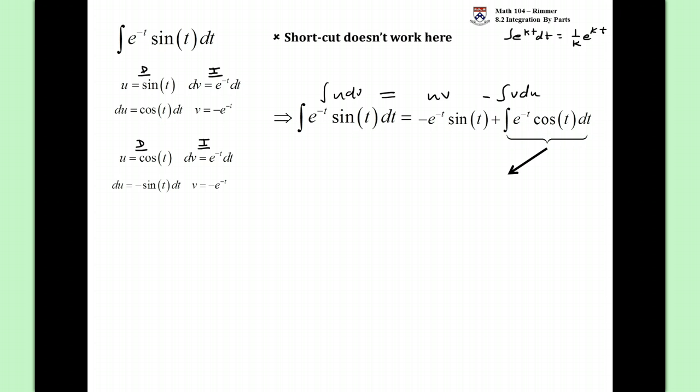So, cosine's derivative is negative sine of t. And, once again, dv's integral, e to the negative t's integral is negative e to the negative t. And so we go through the process again.